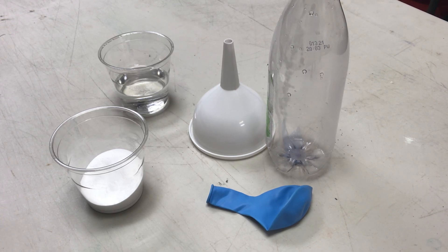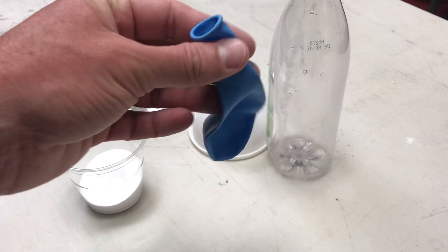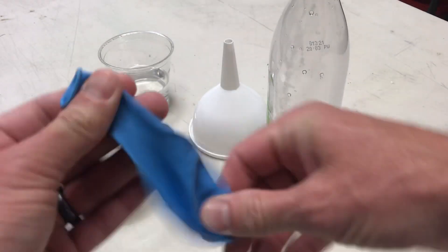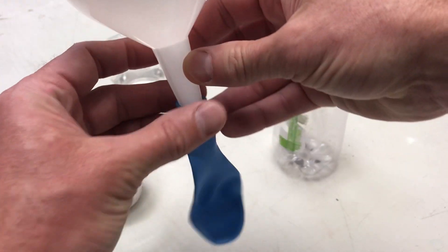All right, today we're going to use an endothermic reaction to inflate a balloon. So this is super easy. The only real trick to this thing is getting our baking soda into our balloon.